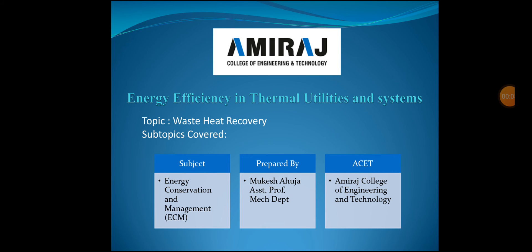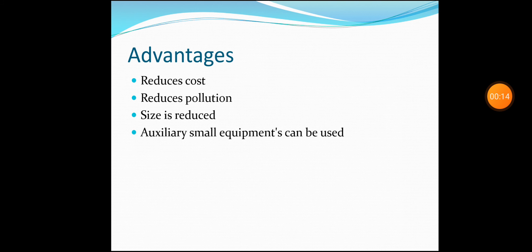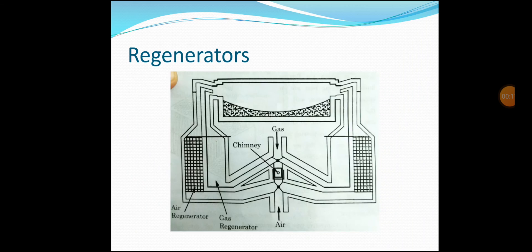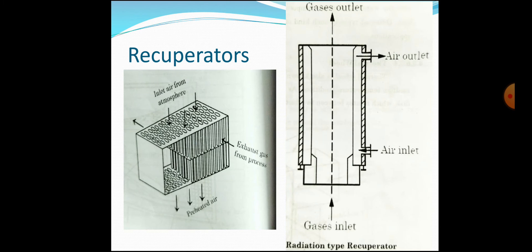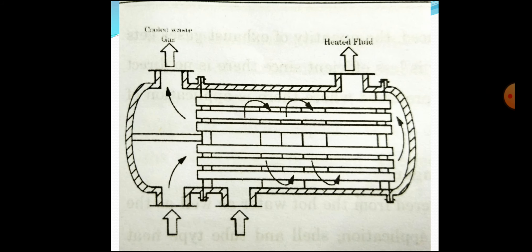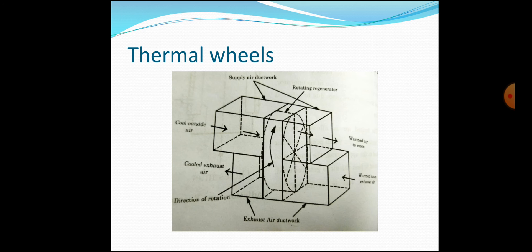In the last lecture we discussed some waste heat recovery devices, including regenerators, recuperators, and shell-and-tube type heat exchangers. Now we will move ahead and see a few more devices: thermal wheel, economizer, waste heat boilers, and so on. Let's start with the thermal wheel.